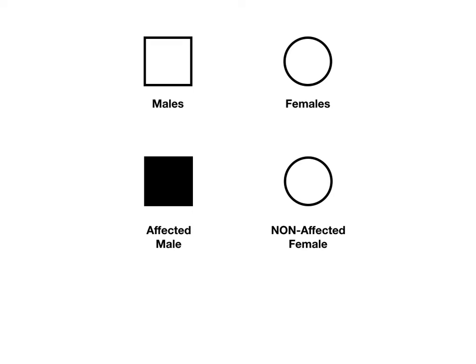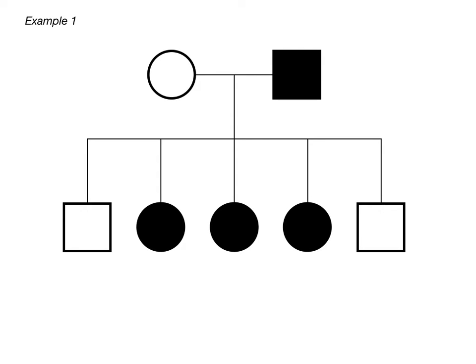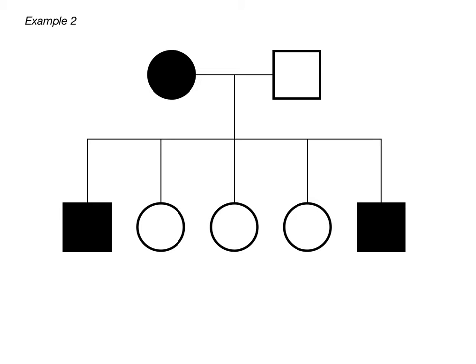There are two examples we're going to do in this video. Here's the first example — if you see this pedigree, the question is: what is the mode of inheritance? And here's example two — same question. When it comes to X-linked inheritance, there are two rules in my system that you should memorize. If you understand these rules, you'll get every single X-linked dominant and X-linked recessive pedigree question right. I'll tell you the rules, prove they work, and then come back to these examples.